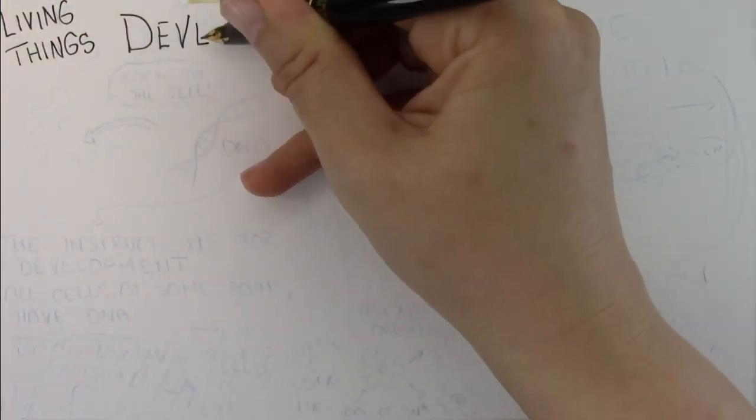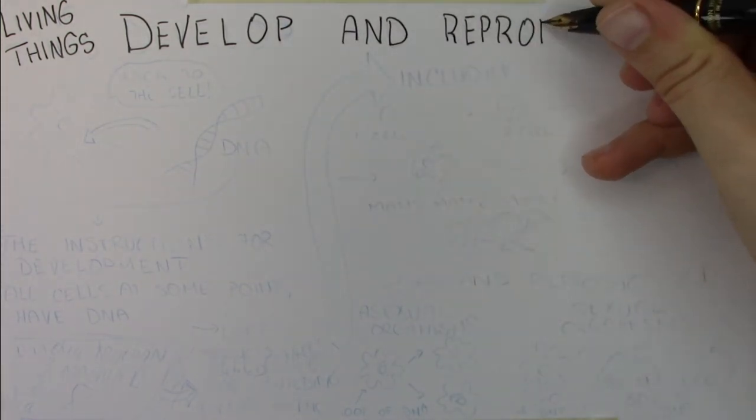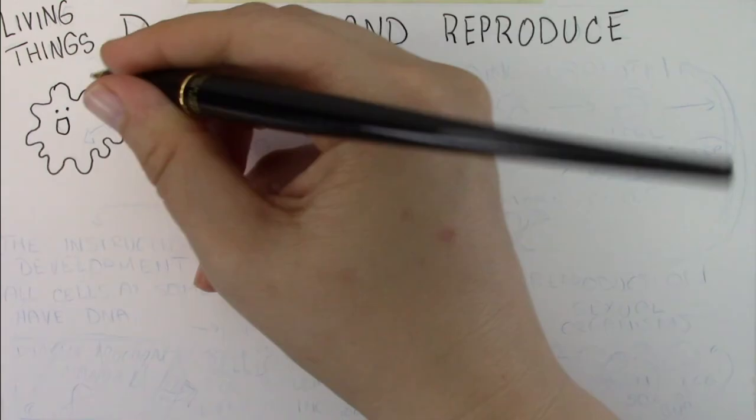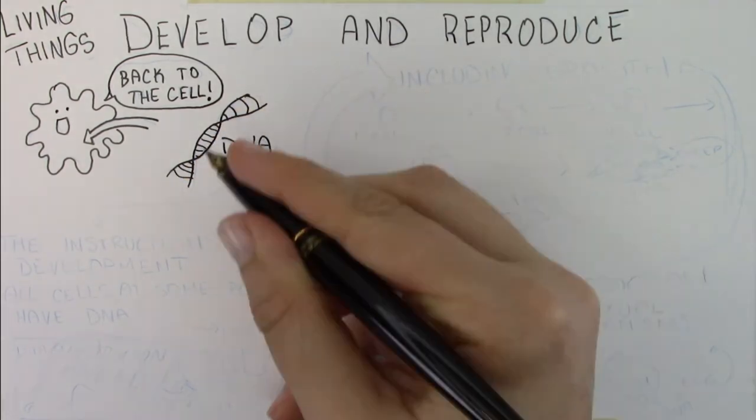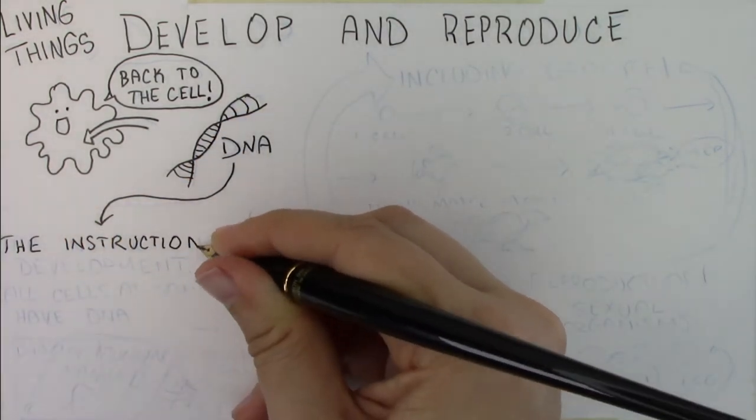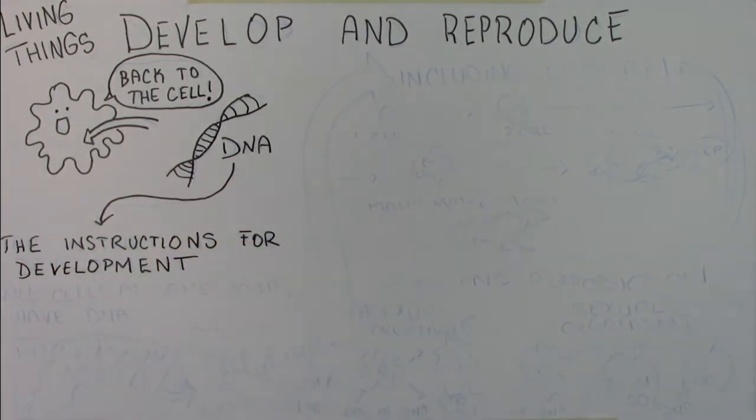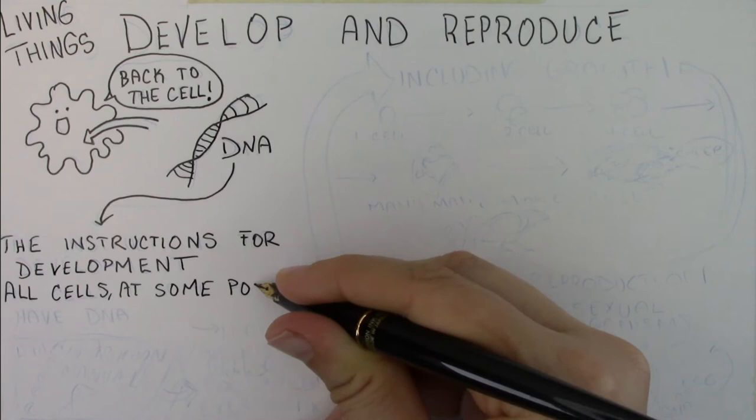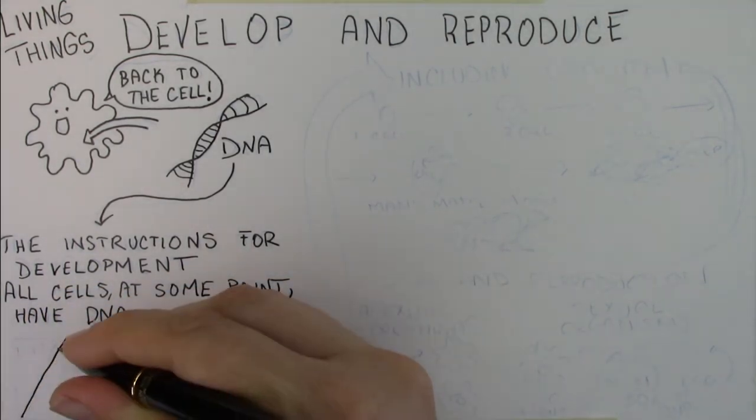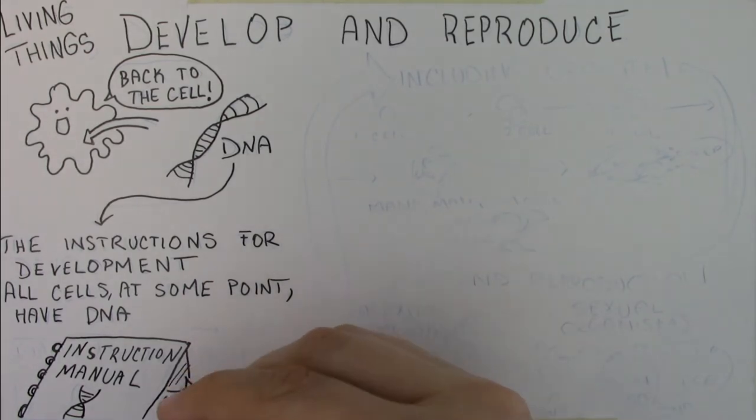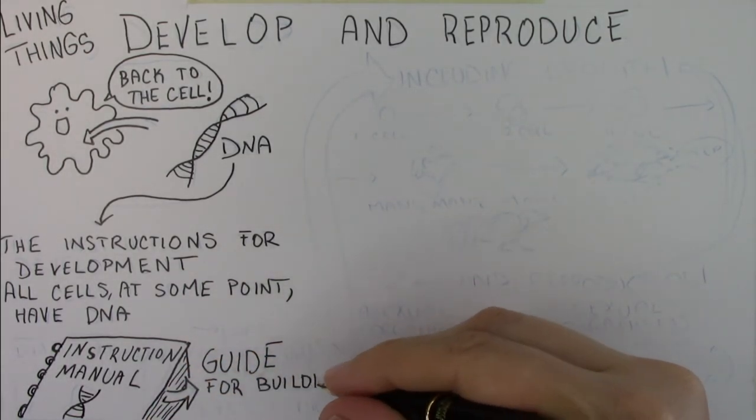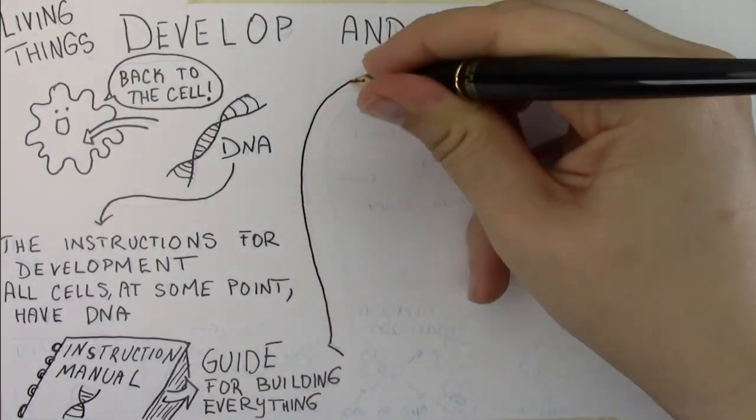For this next rule, we are actually going to go back into the cell. And this rule is that living things develop and reproduce. We have to go back into the cell right now because what's actually going to control that development and reproduction is DNA. To put it simply, DNA is basically the instruction manual for building an organism, whether it's a single-celled organism or a million or billion-celled organism like you. It's going to be that DNA that codes for the information that results in whatever is being developed. So in short, DNA is basically the instruction manual. And almost every cell has DNA in it, although there are some exceptions like mature red blood cells.